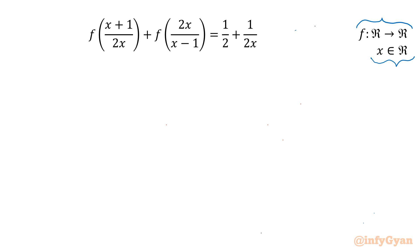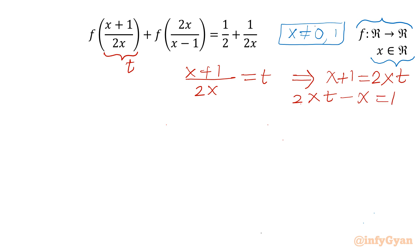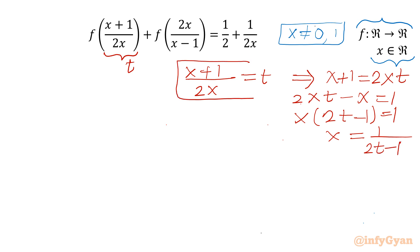Let's get started by noting that x cannot be 0 and x cannot be 1. Now I will use the method of substitution straight away. Let us consider the bracket equal to t, so I will write x + 1/(2x) = t. From here I can write x + 1 = 2xt, or 2xt - x = 1, so x(2t - 1) = 1, giving us x = 1/(2t - 1).